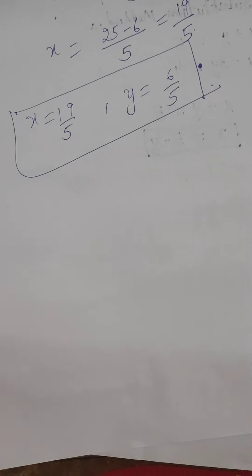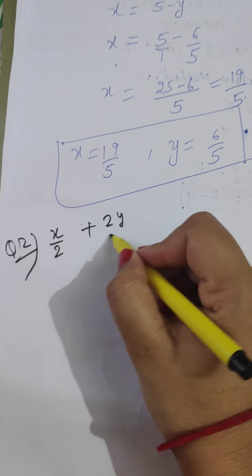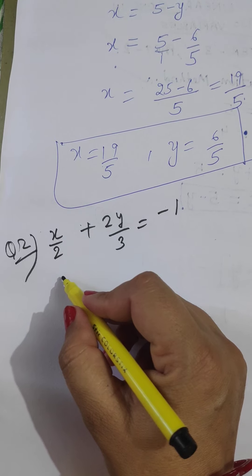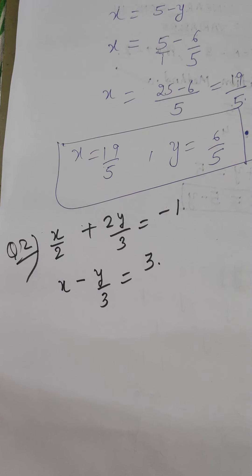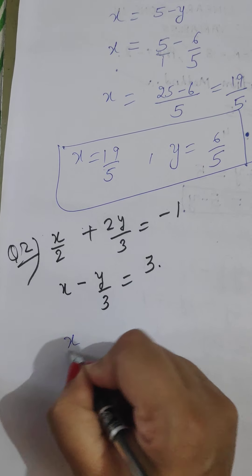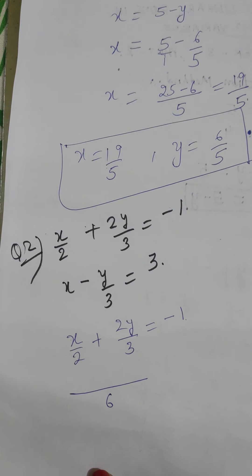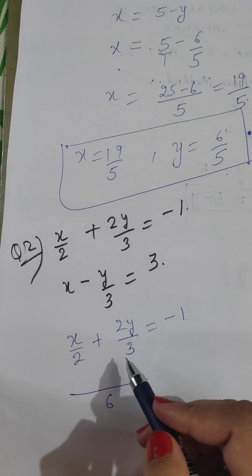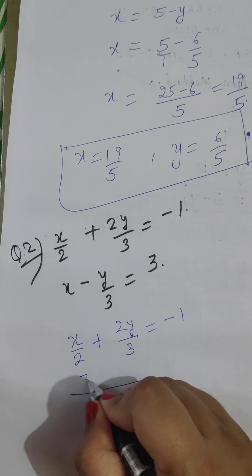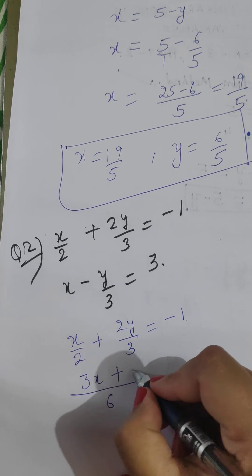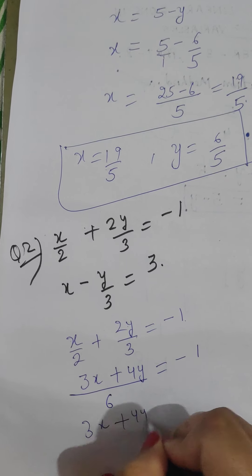The second question is: x upon 2 plus 2y upon 3 equals minus 1 — this is the first equation — and x minus y upon 3 equals 3 — this is the second equation. For the first equation, we will change it into a simpler general form by taking LCM as 6. The general form is a1x plus b1y equals c1. It becomes 3x plus 4y equals minus 6. This is our first equation in general form.